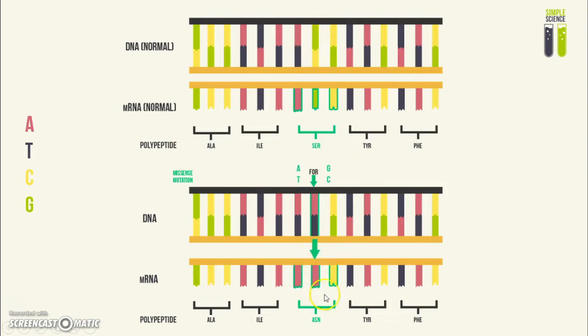We get this codon instead of this codon, and then this codon codes for the amino acid asparagine. As you can see, the amino acid has been changed, and this can have detrimental effects on the person.